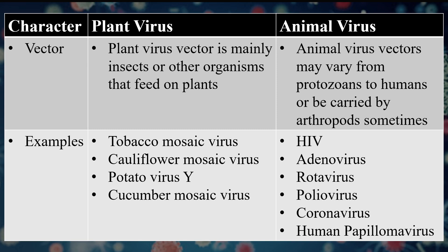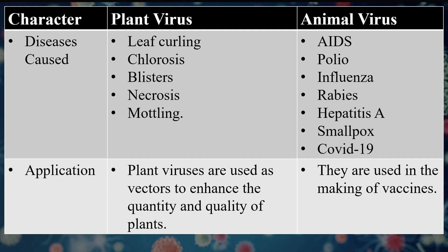Examples of plant viruses include tobacco mosaic virus, cauliflower mosaic virus and cucumber mosaic virus. Examples of animal viruses include HIV, adenoviruses, rotavirus and poliovirus. Infections like AIDS, polio, influenza and rabies are caused by animal viruses, while plant virus infections include leaf curling, chlorosis, blisters, necrosis and mottling. Plant viruses are used as vectors to enhance the quantity and quality of plants, while animal viruses are used in the making of vaccines.